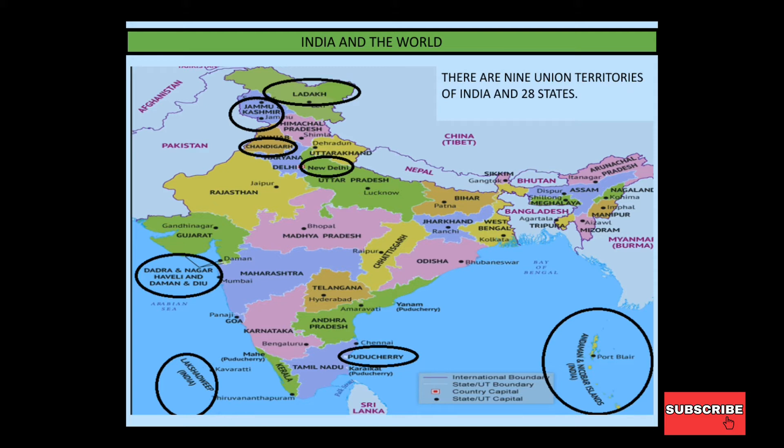First of all, what are Union Territories? In 1947, when India and Pakistan had a partition, there were some outer territories which were not part of India. When they joined India, they were named Union Territories.